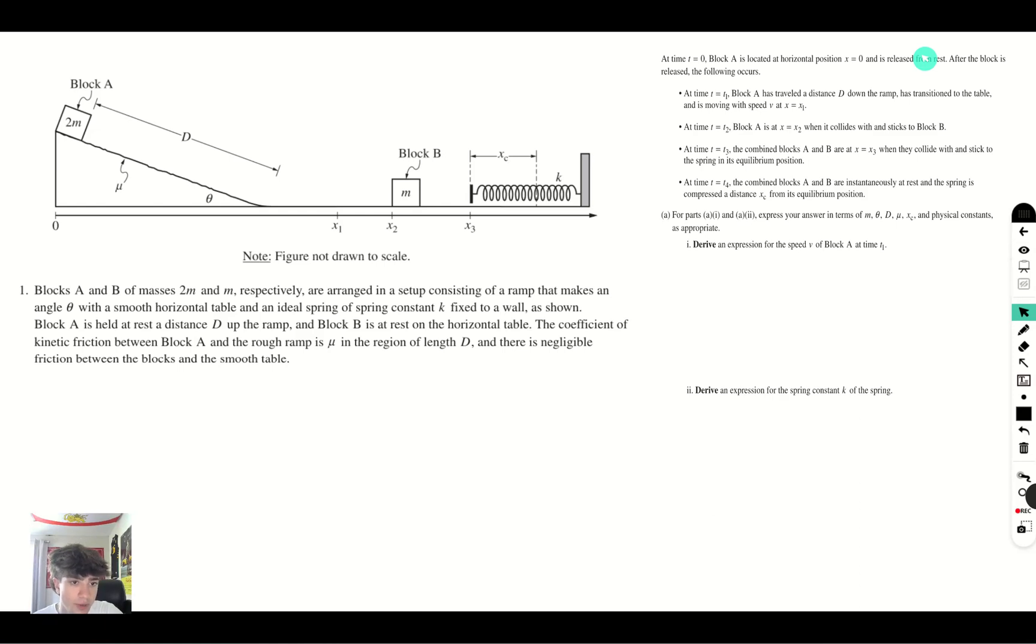We have a block of mass 2m on a ramp. The ramp is not frictionless, it has a coefficient of friction mu. Then we have another block of mass m on this flat surface, which is frictionless. The blocks collide with each other at x2, and they have an inelastic collision, which means they stick together, and they move horizontally into this spring here, and they compress it to a max compression of distance xc. And at xc, the two-block system comes to rest.